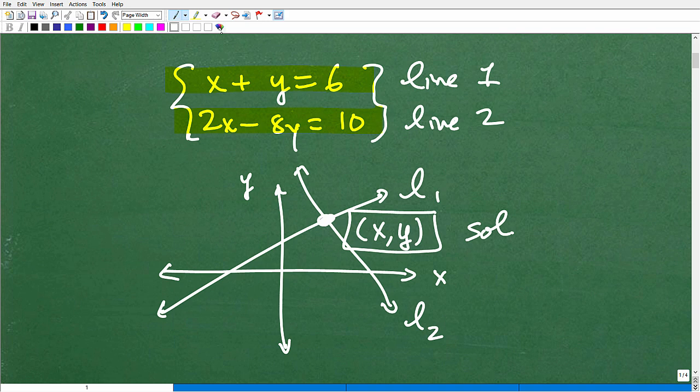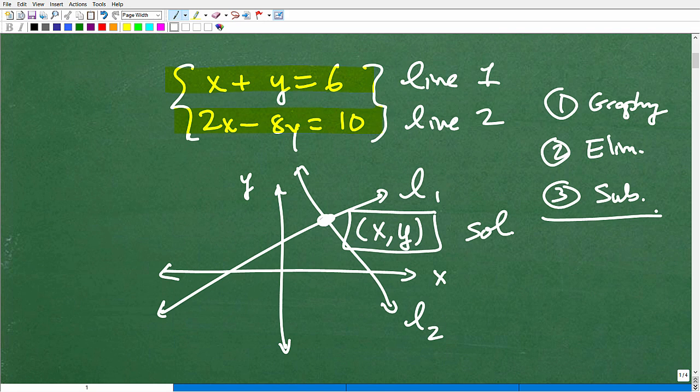Just so you know, to solve systems you have some choices. I could actually graph the lines and look where they cross. That is the graphing method, which is not really a practical method. It's okay when we're learning the concept of systems, but then we have two main methods. The first would be the elimination method, sometimes called linear combination. That's one method, and the other is the substitution method. In more advanced topics, there's even other ways we can solve systems. You need to know both of them.